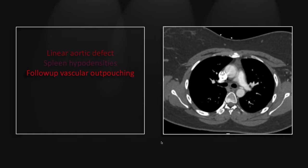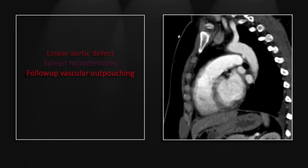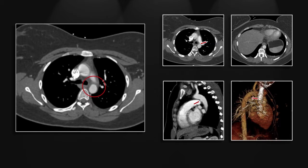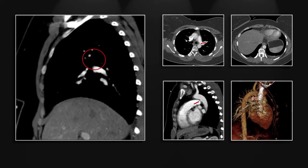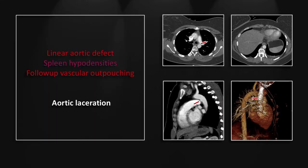This patient was scanned a week later and you can see a much smoother, most likely intimalized pseudoaneurysm, resolution of the splenic hypodensities, and again the pseudoaneurysm on the sagittal and 3D. And there it is on axial images and sagittal. So that is an aortic laceration at the aortic isthmus with later intimalization.